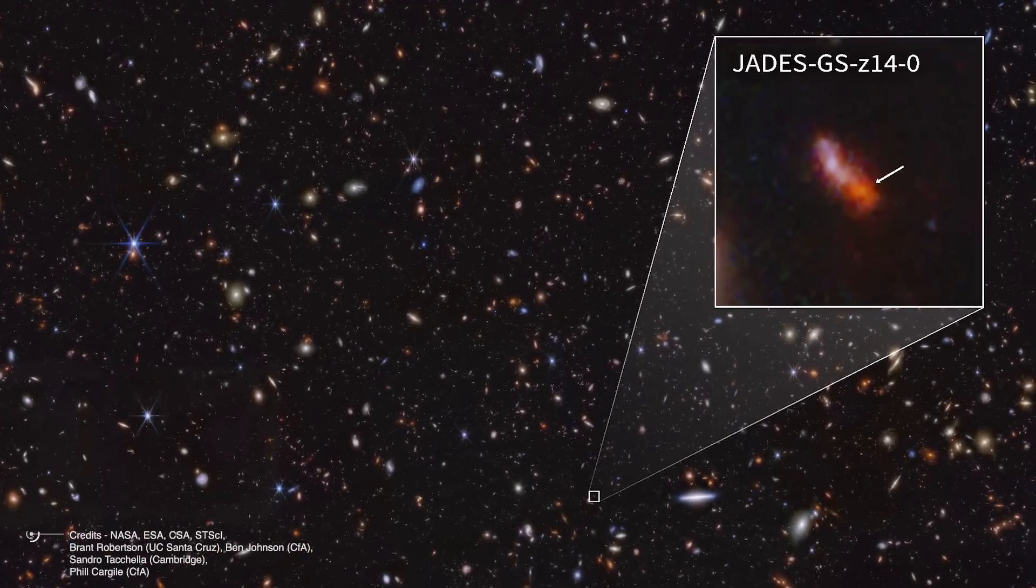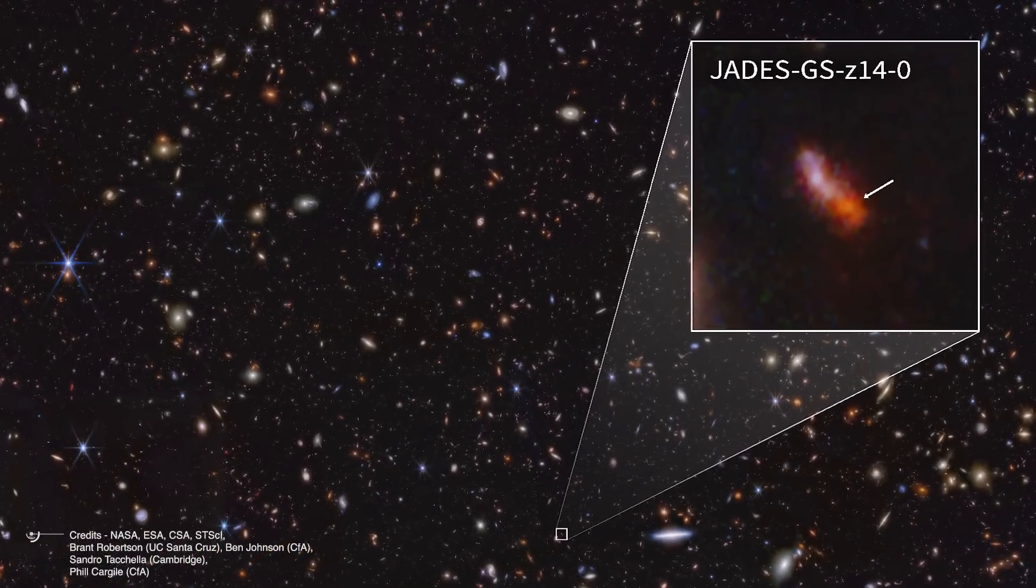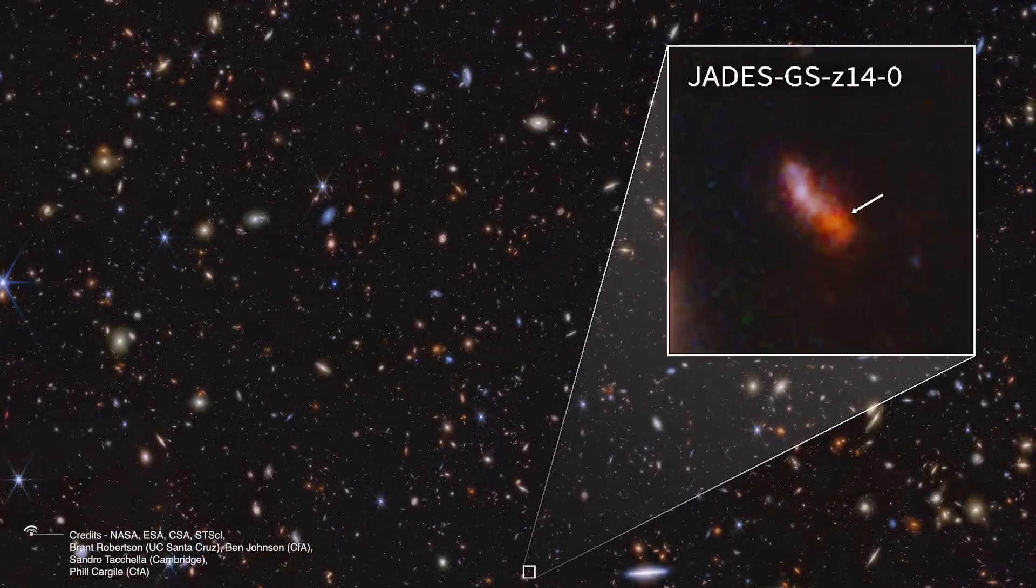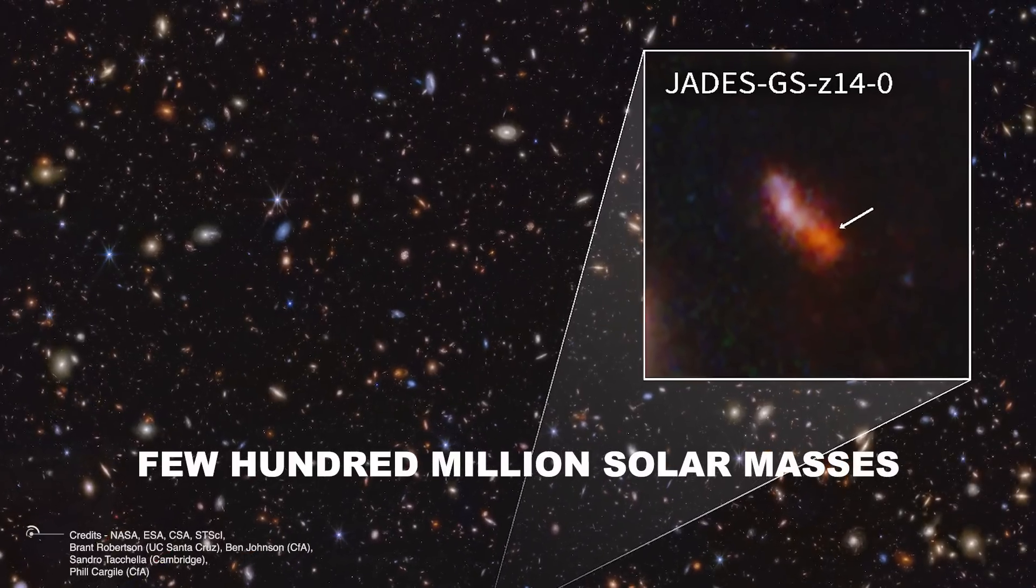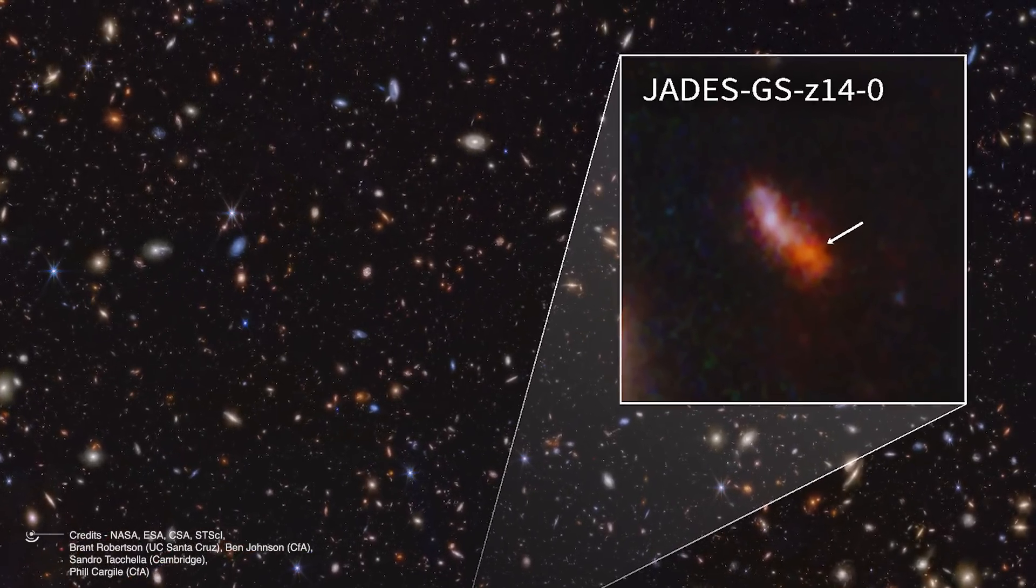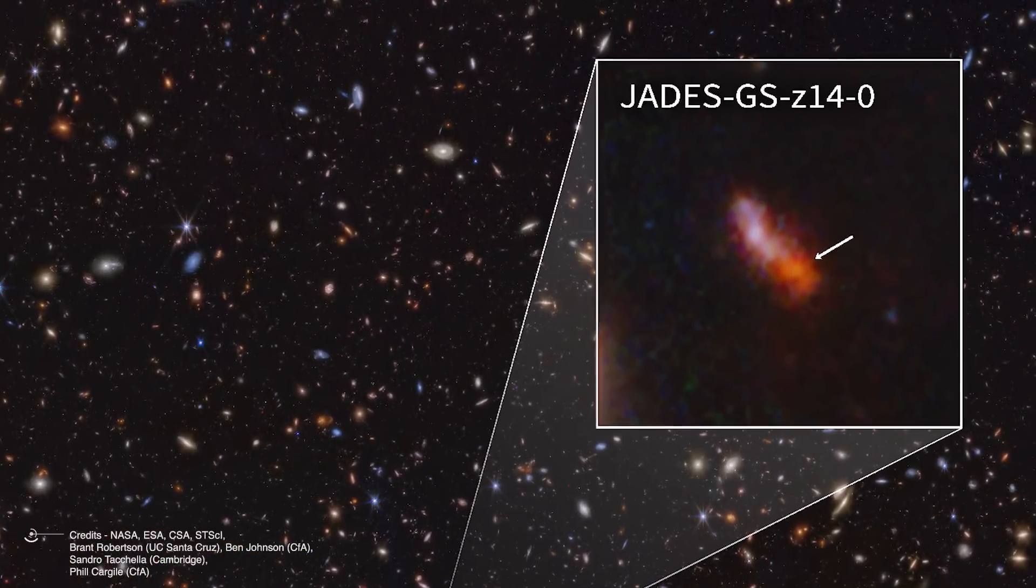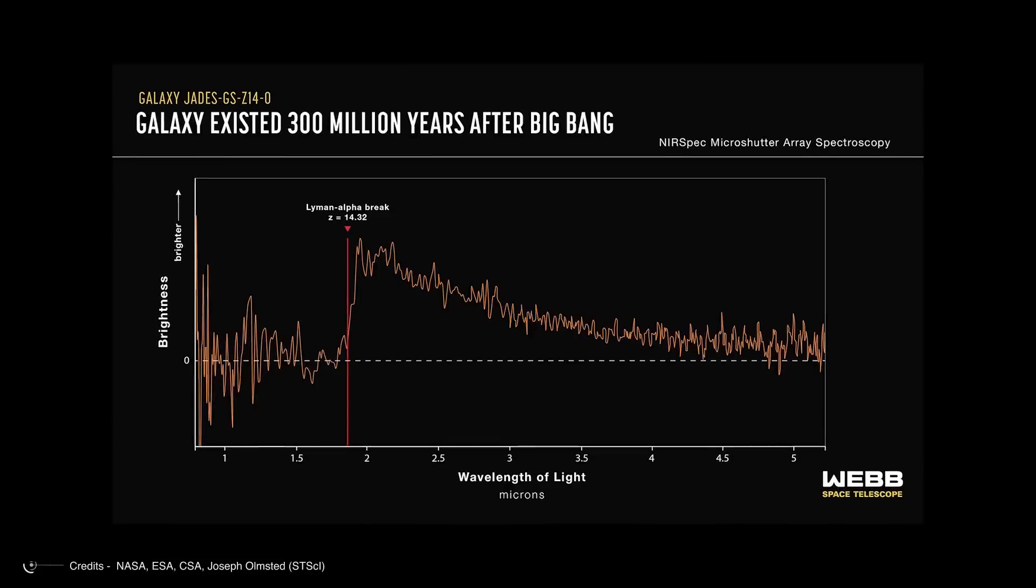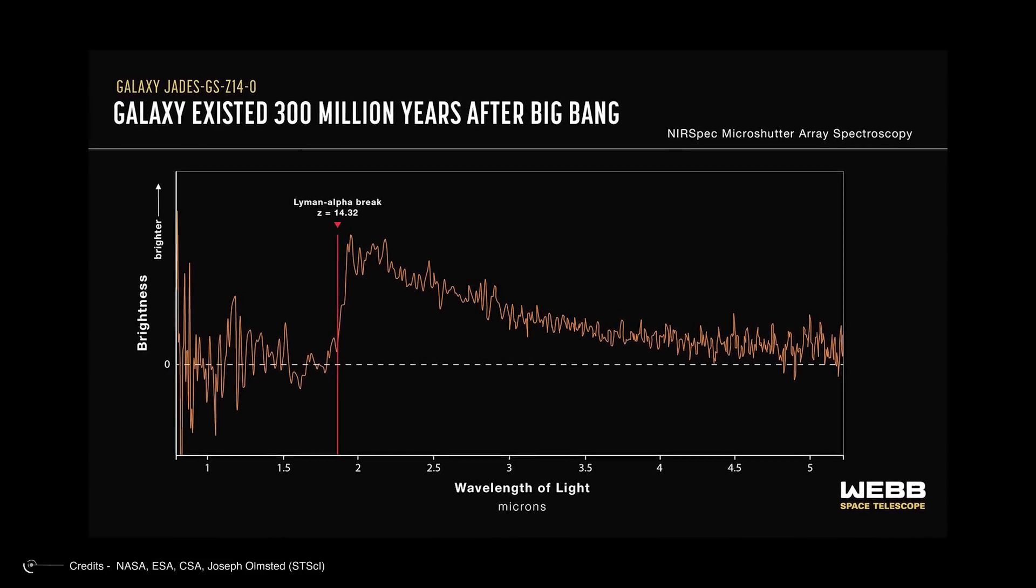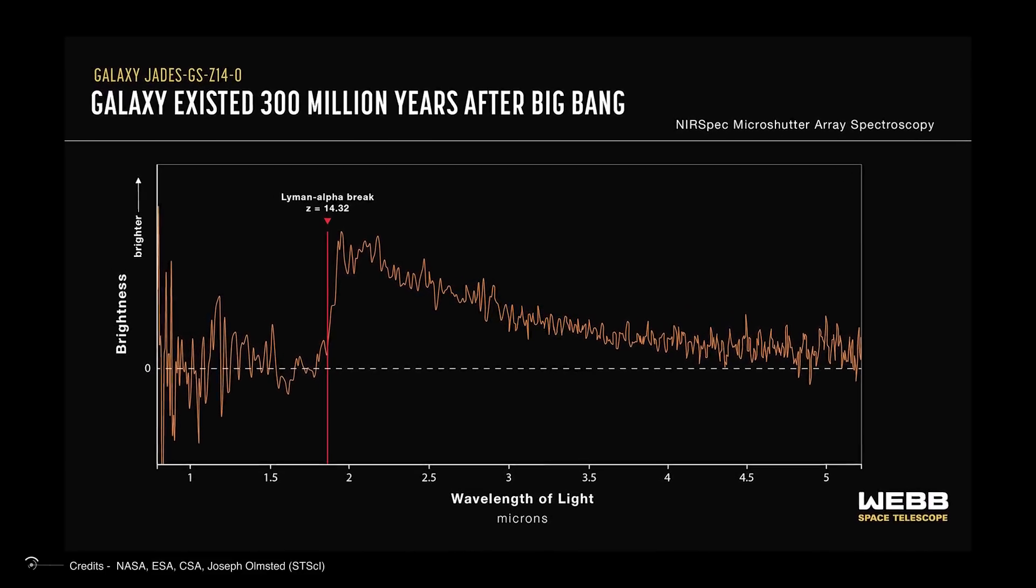Take, for example, JADES-GS-z14-0. With a mass of at least a few hundred million solar masses, it's not enormous, but it's extremely bright, with intense star activity. Its existence just 300 million years after the Big Bang is much sooner than anticipated.